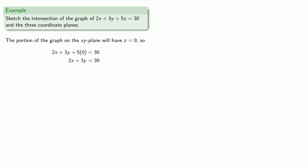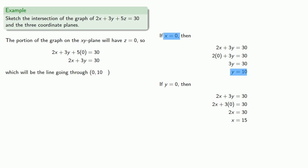We can find points by letting the variables take on different values. For example, if x equals zero, we find y equals 10. And if y equals zero, we find x equals 15. So this will be the line going through the point x equals zero, y equals 10, and x equals 15, y equals zero.